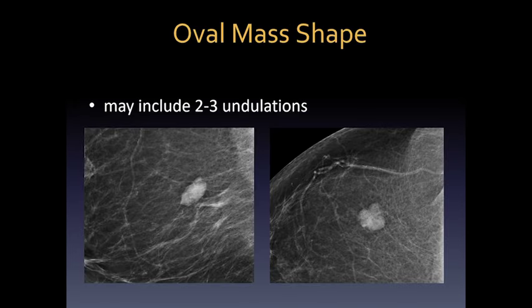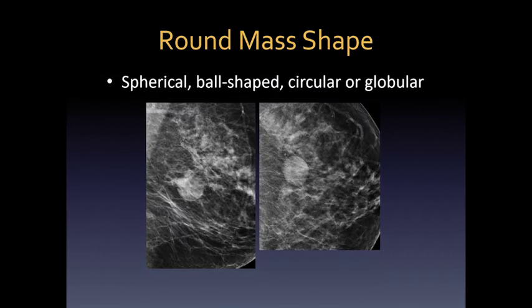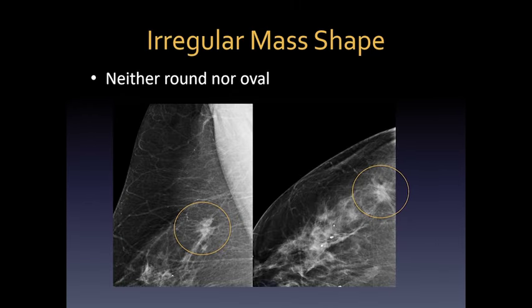Here is a characteristic oval mass with about three smooth undulations — it looks very benign. Here, on the other hand, is a round mass defined as spherical, ball-shaped, circular, or globular. We have to be concerned it could represent a cyst but must investigate further. An irregular-shaped mass is neither round nor oval — here is an example of one that is very suspicious for malignancy.